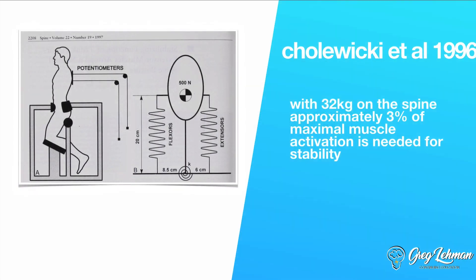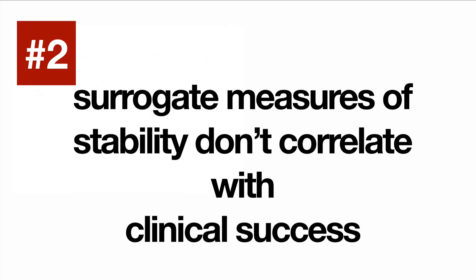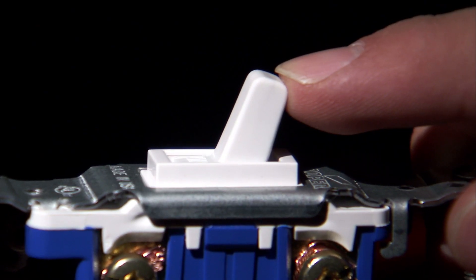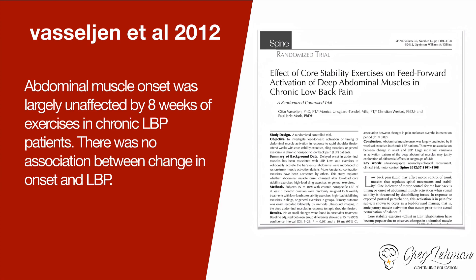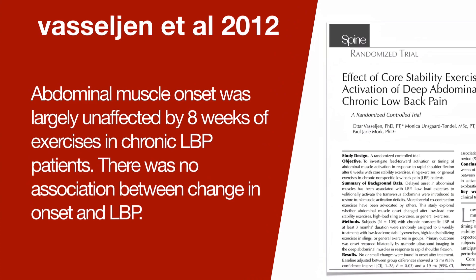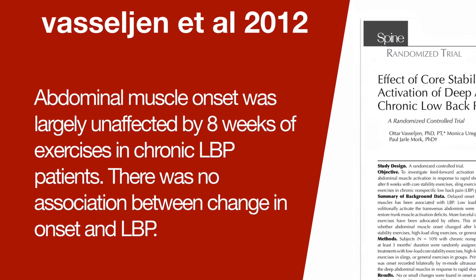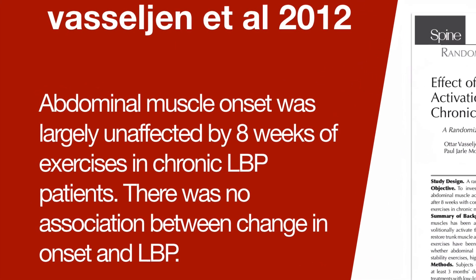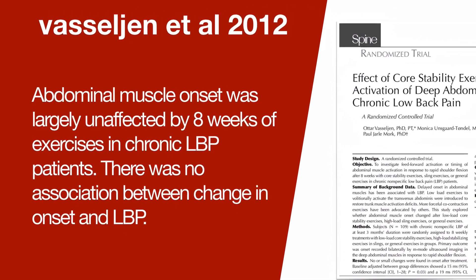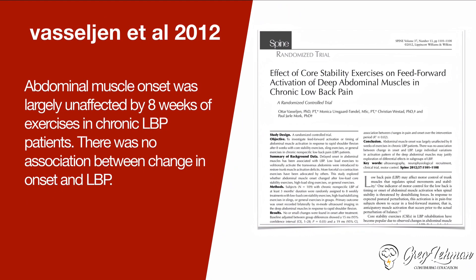Number two: surrogate measures of stability don't correlate with clinical success. Quite often in research we don't even measure stability directly — we measure surrogate measures like when muscles turn on and off. What this paper and many others have shown is that measures of the transverse abdominus or the multifidus may or may not change, but they don't seem to correlate with success measures like people feeling better, having less pain, and doing more. So how relevant are these dysfunctions?